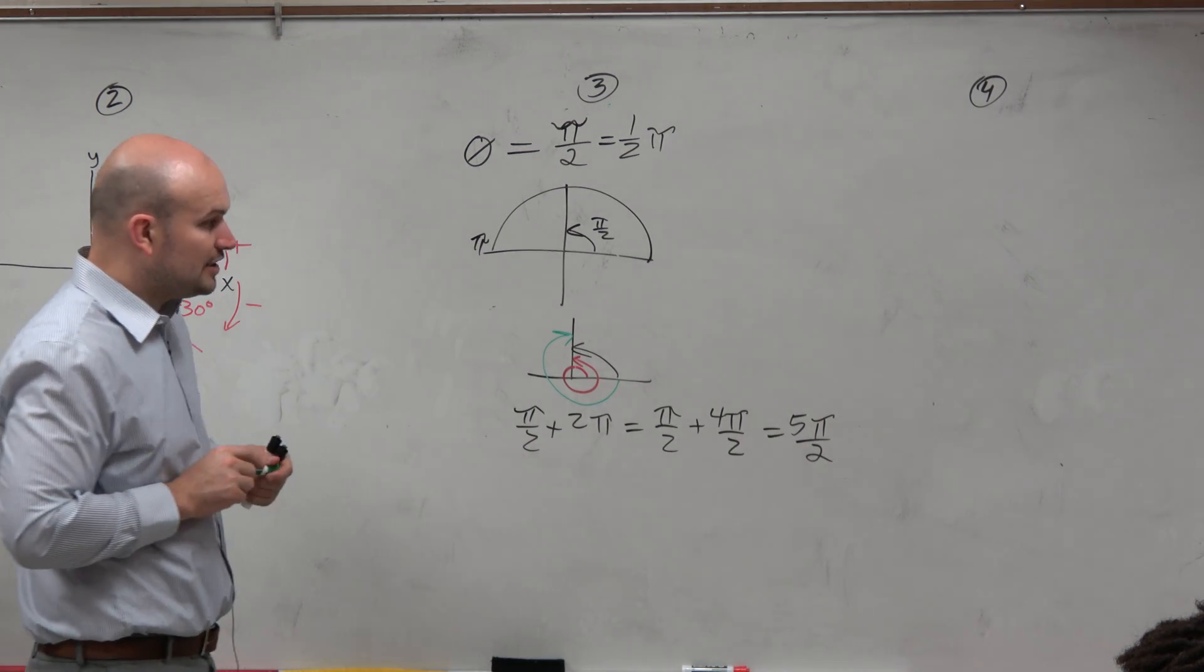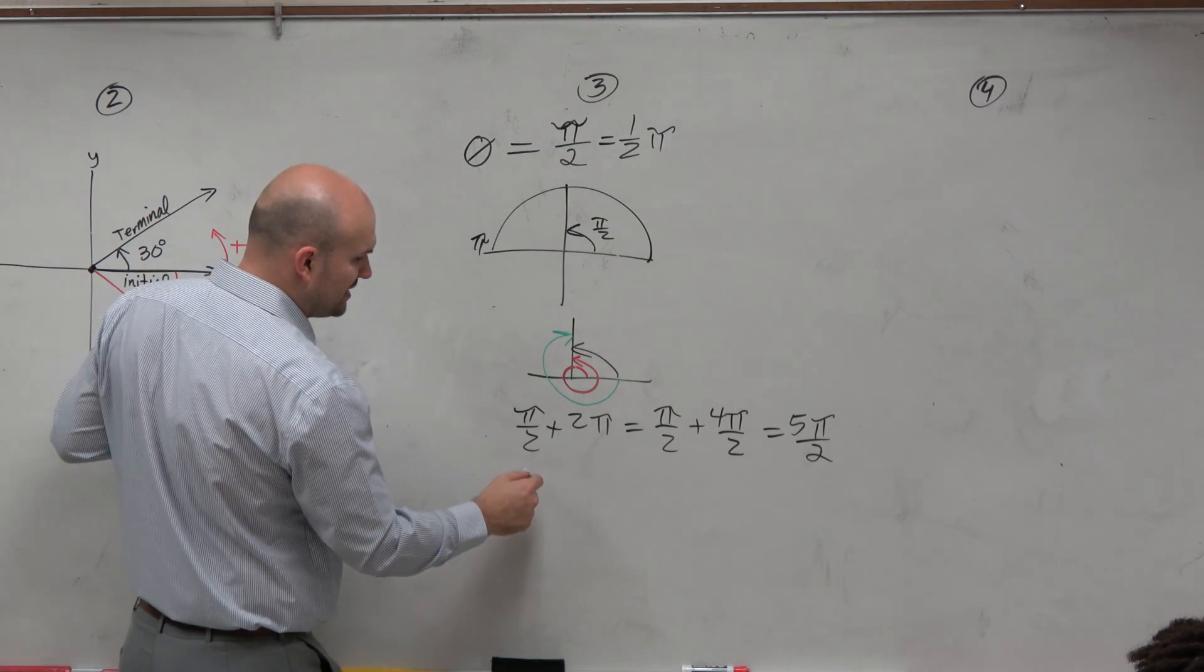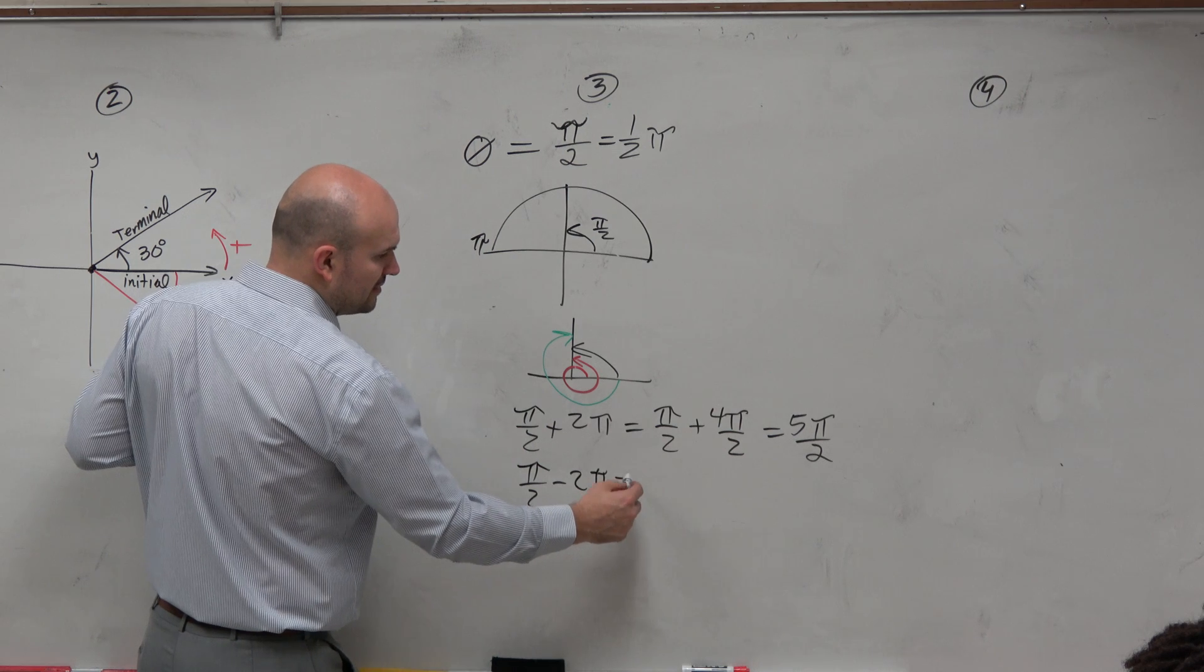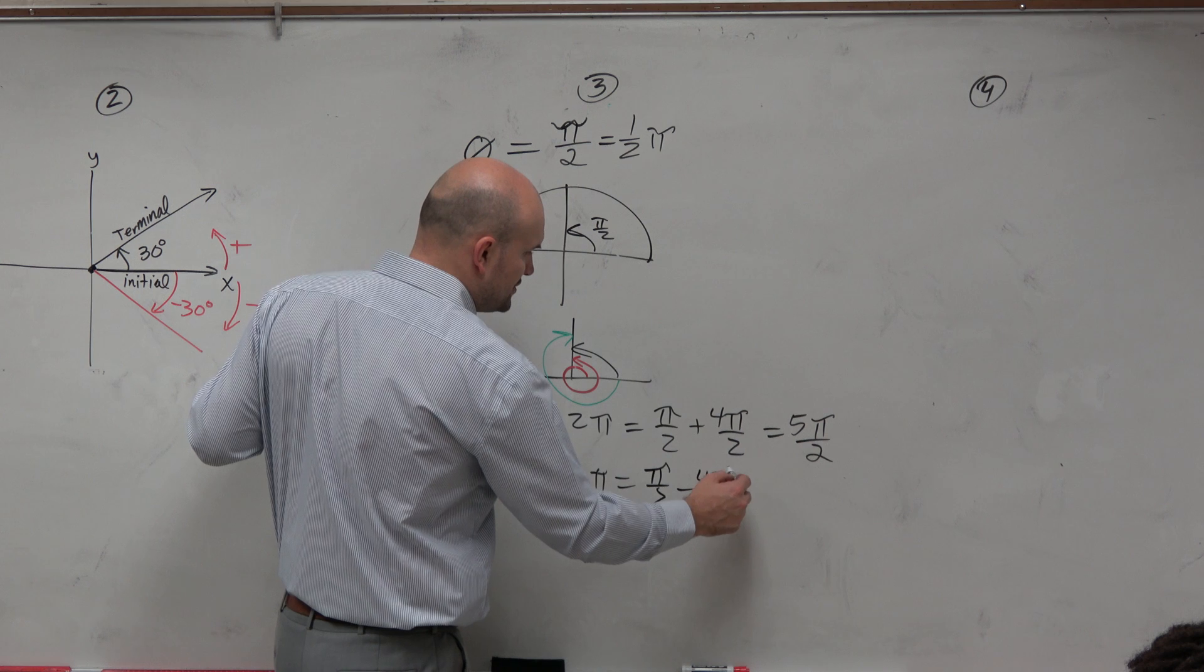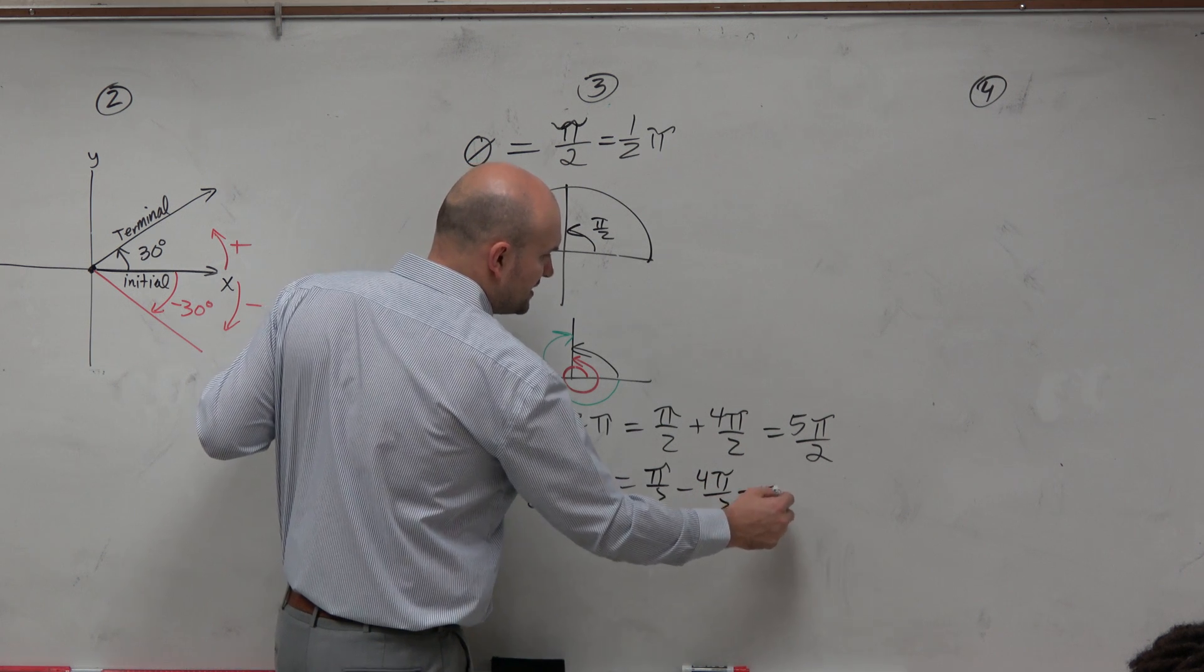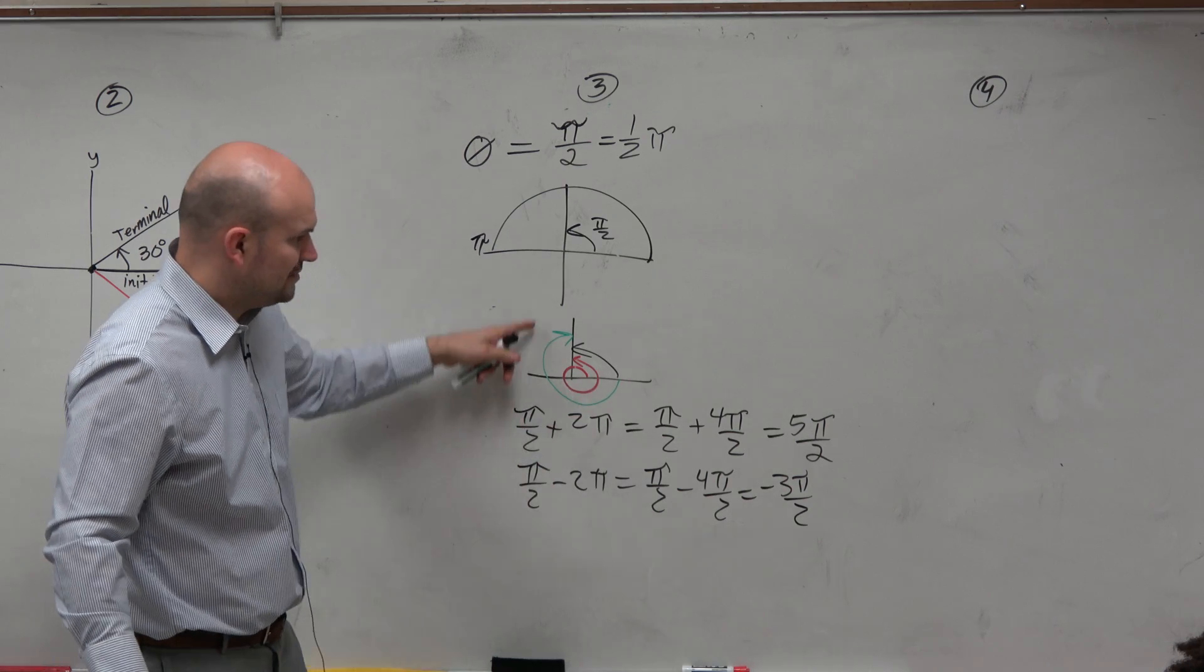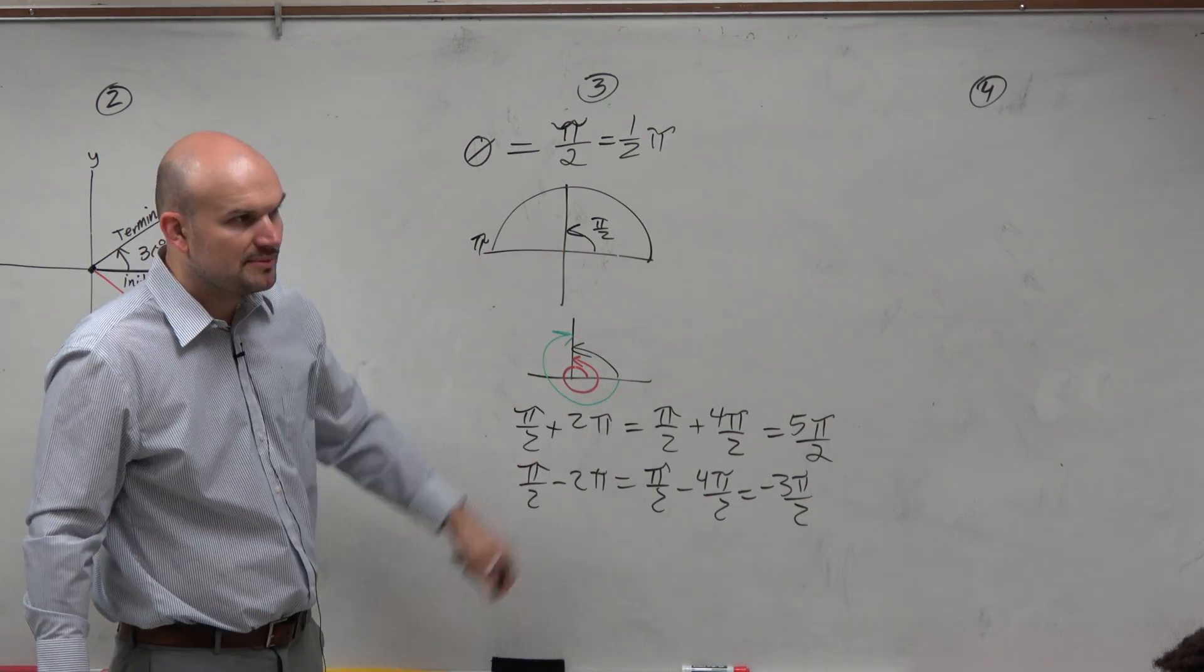So another way to get a coterminal angle is in addition, rather than adding 2 pi, you can also subtract 2 pi. And let's just go ahead and do that in the other way. So subtract 4 pi over 2, and you get negative 3 pi over 2. And does this green angle look like negative 3 pi over 2? Yeah, that would be it.